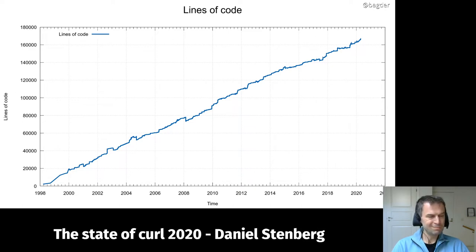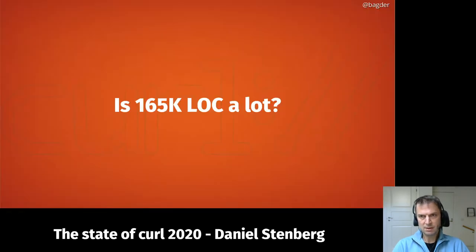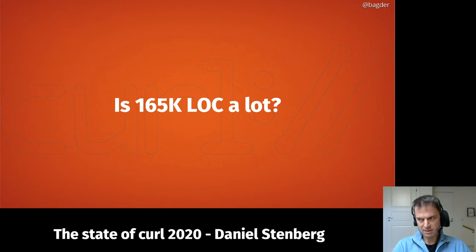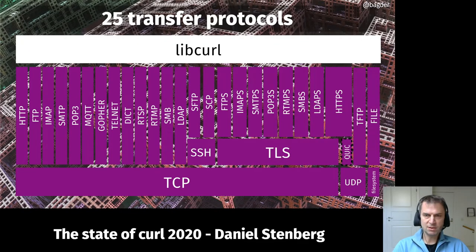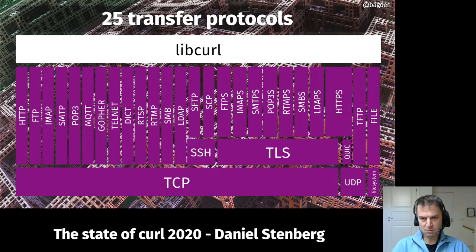It seems like that's a trend that's been going on for a long time. The question I get a lot is: how can a simple little tool have 165,000 lines of code — isn't that a lot? But I would argue it's pretty okay. We support right now 25 transfer protocols, and here you can see them in a view of how they work on top of different transports — TCP, TLS, SSH, UDP, and so on.